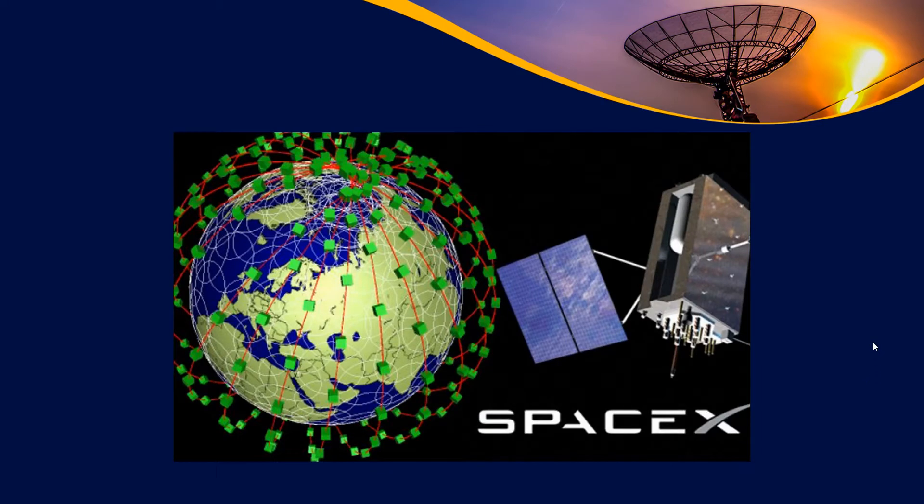So this is an example of what the Starlink constellation might look like. You're going to have far far more satellites in order to maintain that coverage, and if you read the documentation, they're planning on launching thousands of satellites to make this internet work in order to have this high data system work across the entire globe all the time.